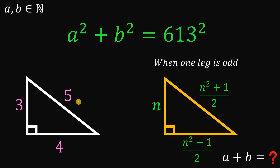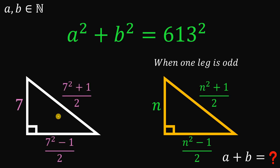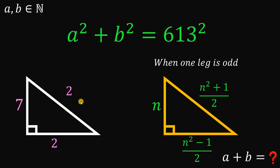Another example: if n is 7, the other leg is (49 minus 1) over 2, which equals 24. And the hypotenuse is (49 plus 1) over 2, which equals 25. So we have the Pythagorean triple 7, 24, 25.